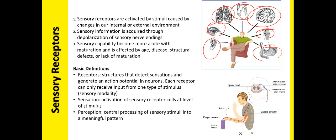Sensory capability can become more acute as we mature, but as we age or develop diseases or structural defects, they can also be affected. So, receptors are structures within our body that detect sensations and stimuli, and can generate an action potential in neurons.